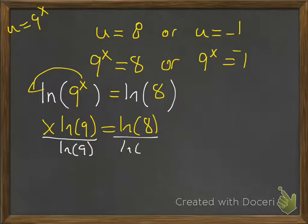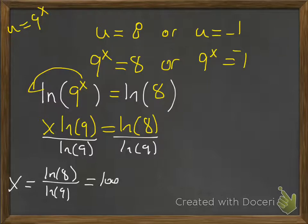And then we'll divide both sides by the ln of 9. And so there's a couple of different ways we can write this. So x equals ln(8) over ln(9). And if we use our change of base formula, the denominator argument is going to be the base, which is 9, and then the numerator is going to be the argument.